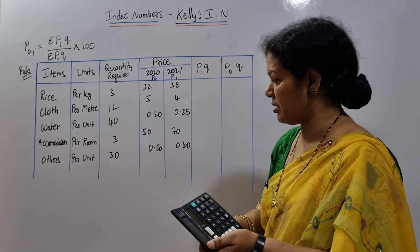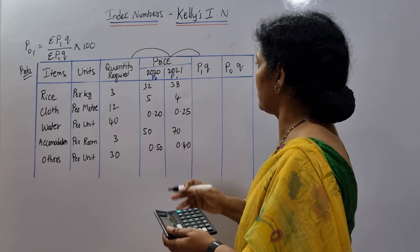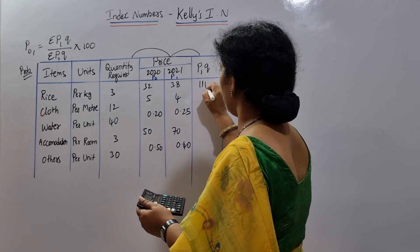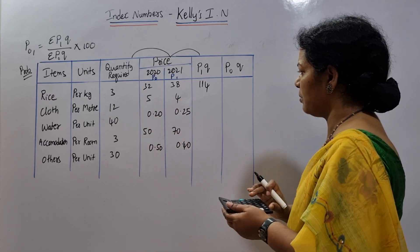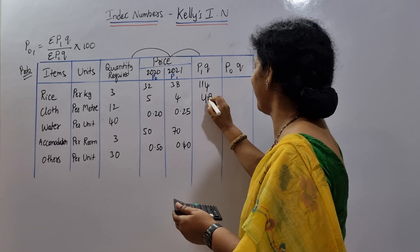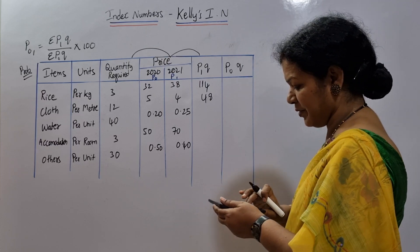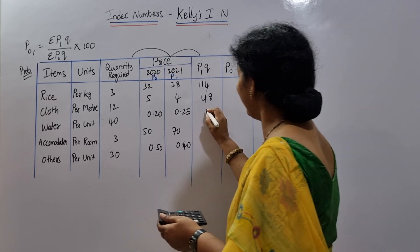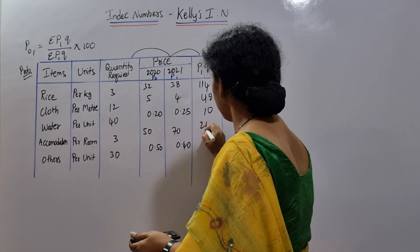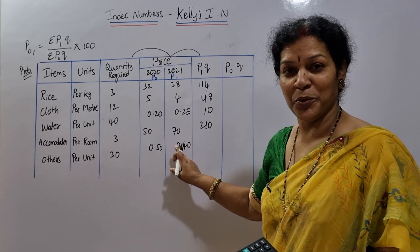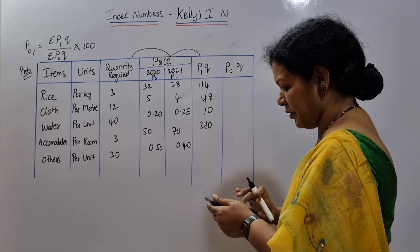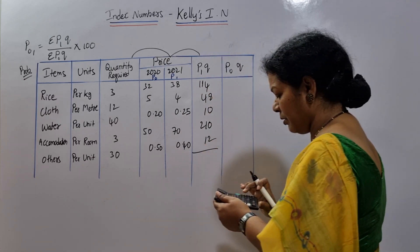Calculating P1Q: P1 into Q — 3 into 38 gives 114. Next, 12 into 4 gives 48. Next, 40 into 0.25 gives 10. Then 14 into 0.25 gives... continuing through the entries. Next, 13 into 0.30, and 0.40 gives 12. The total P1Q comes to 394.